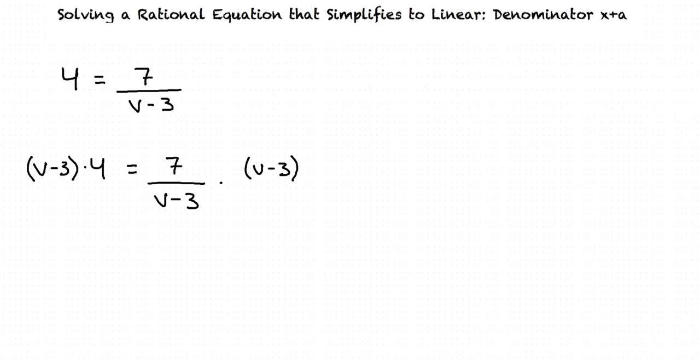Why do we do this? That's a great question. We cannot solve for v if it is in the denominator, so we multiply both sides of the equation by v minus 3 to eliminate it from the denominator.